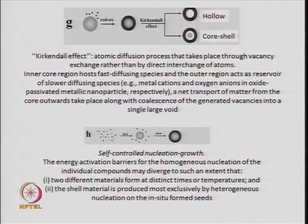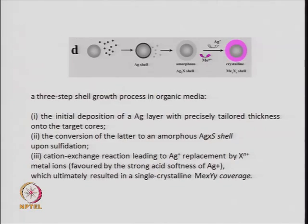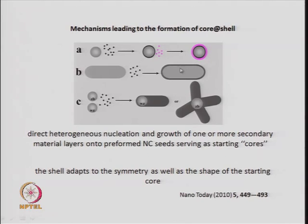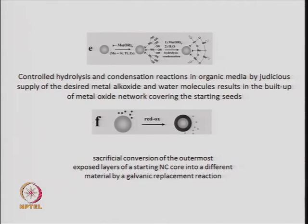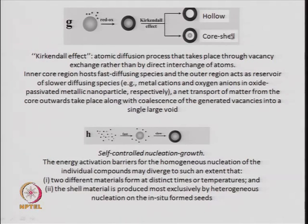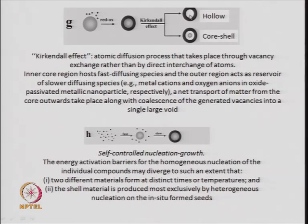In summary, there are many ways to form core-shell structures: from seeds using heterogeneous nucleation and growth; a three-step shell growth mechanism; controlled hydrolysis and condensation; sacrificial conversion of the outermost layer of the core; the Kirkendall effect, which drives matter outward through vacancy coalescence to give a hollow core-shell structure. The structure may become completely hollow if the process continues.